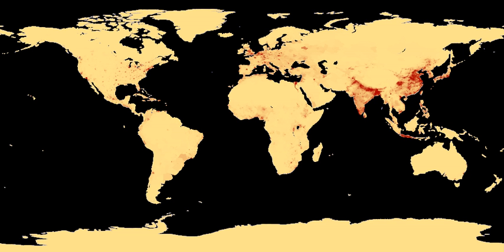Human population control is the practice of altering the rate of growth of a human population. Historically, human population control has been implemented with the goal of increasing the rate of population growth. In the period from the 1950s to the 1980s, concerns about global population growth and its effects on poverty, environmental degradation, and political stability led to efforts to reduce population growth rates.